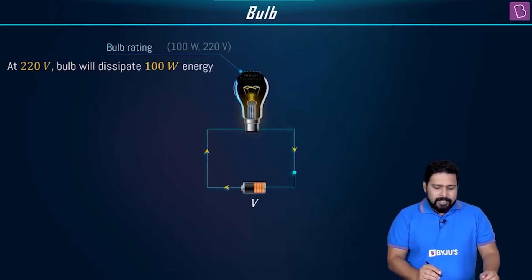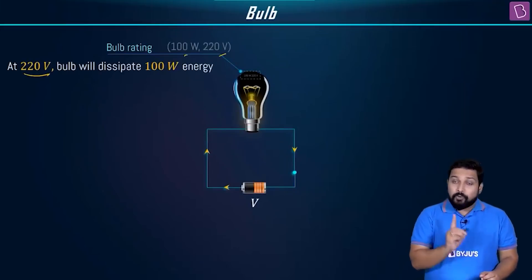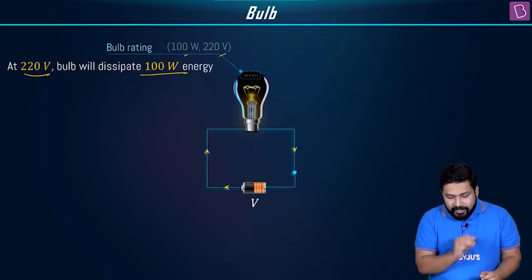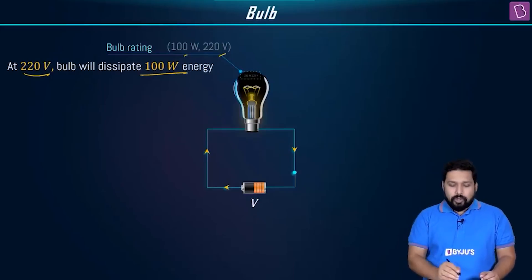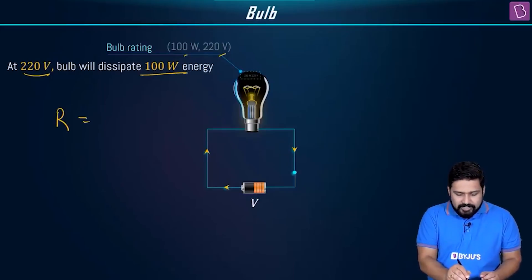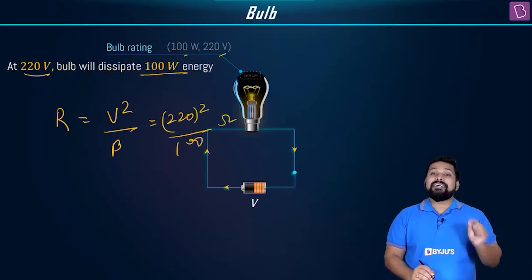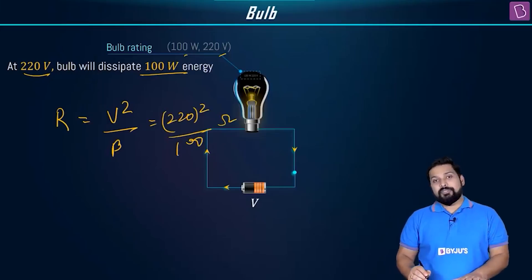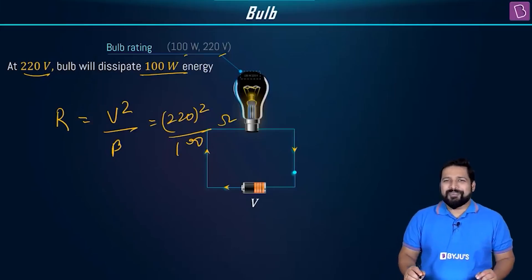So, to summarize: a bulb rated as 100 watts, 220 volts means it dissipates 100 watts at 220 volts. What remains constant is the resistance, R = V²/P = 220² / 100 ohms. That is the resistance of the bulb.